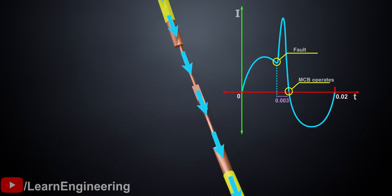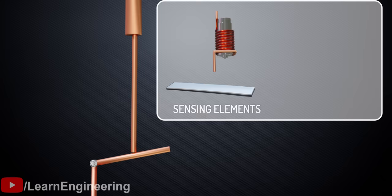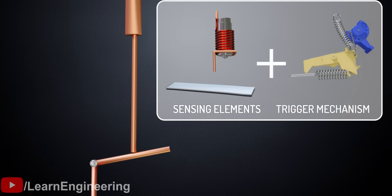Now the question is, how does this system recognize the occurrence of an electric fault? The answer is that it has sensing elements which activates a triggering mechanism.